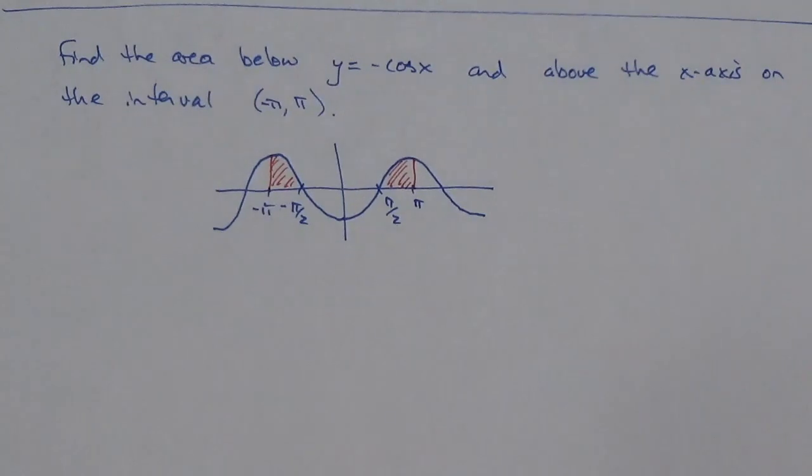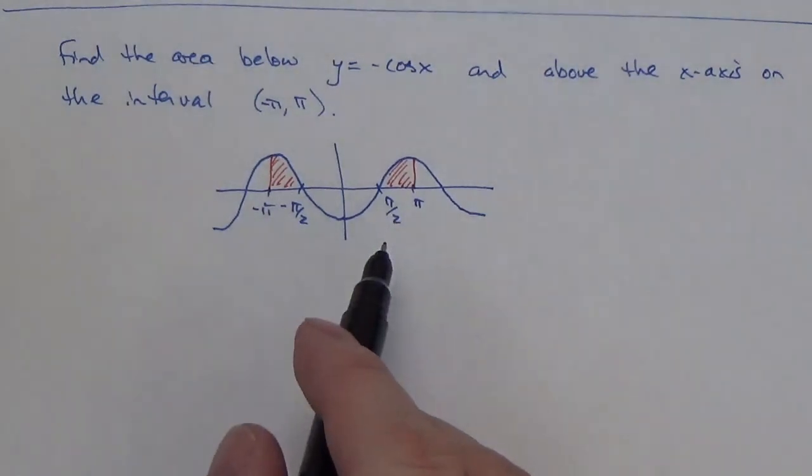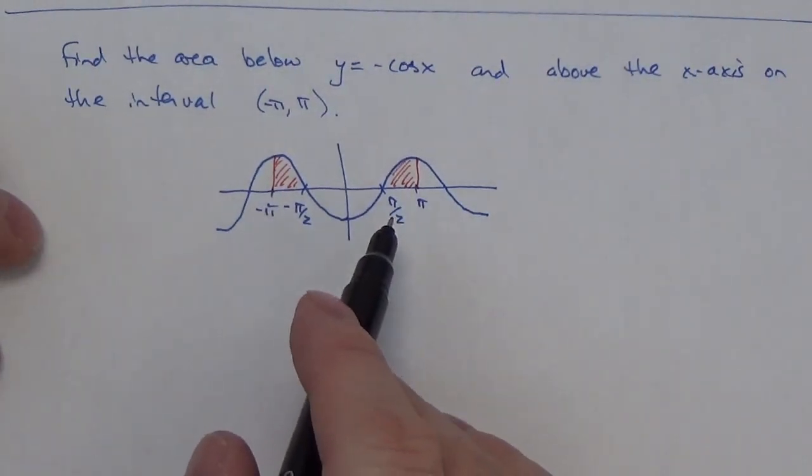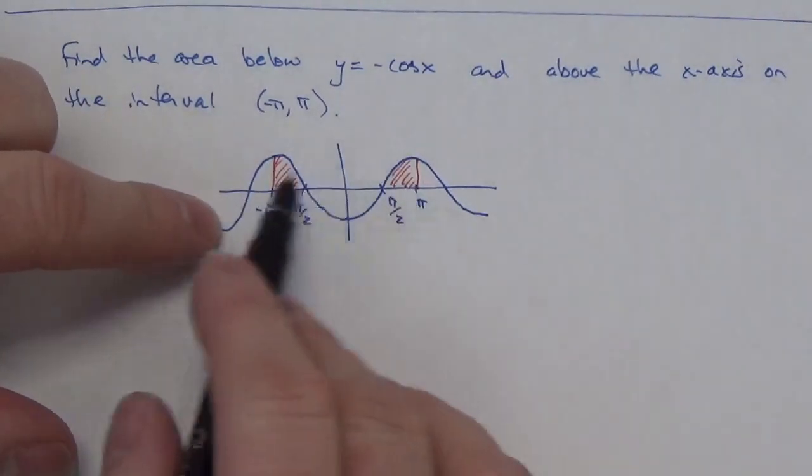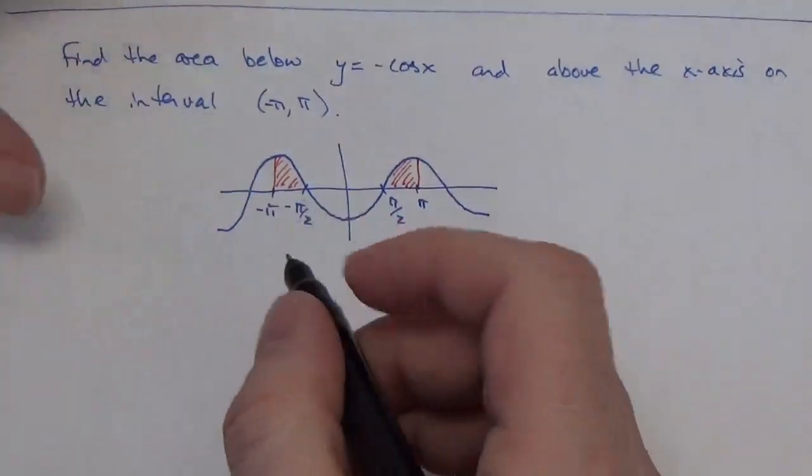Now, which really means that what I can do here is just figure out the area from maybe pi over 2 to pi and multiply that by 2, because there's going to be some symmetry here.